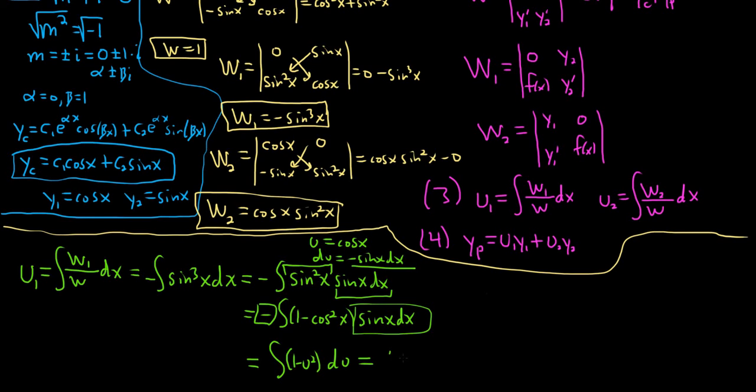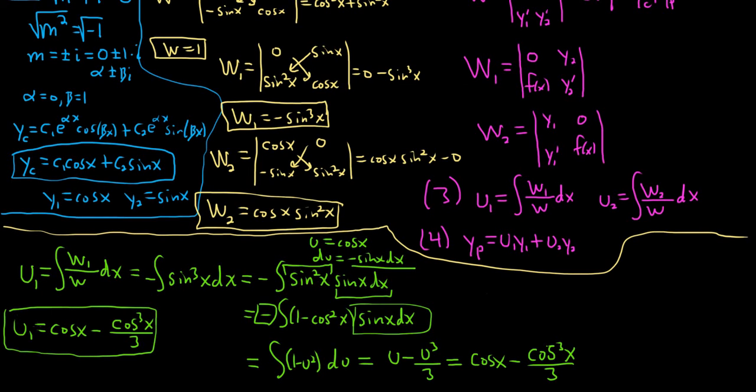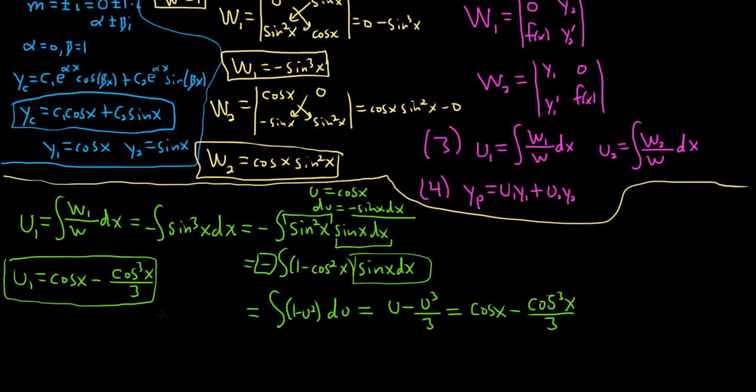And we're left with 1 minus u squared. Integrating this, we're going to get u minus u cubed over 3. Don't worry about the plus c. u is cosine. So this is cosine x minus cosine cubed x over 3. I'm going to write it again over here. u1 is equal to cosine x minus cosine cubed of x over 3. I'm going to put it in a box. Notice I box all the important stuff. It really helps you keep track of what's going on. Also, if you're taking a class and you're doing this for an actual class, it helps whoever's grading your work tremendously because they can see what's going on.